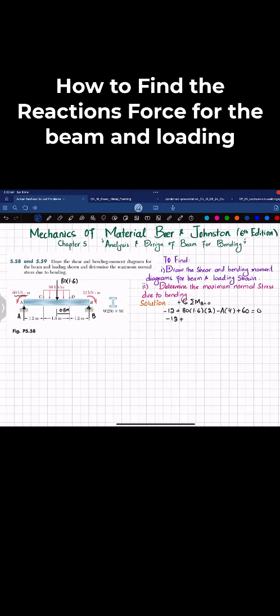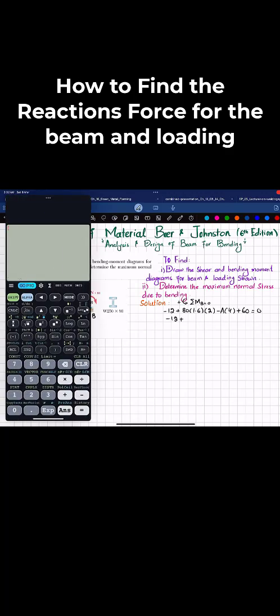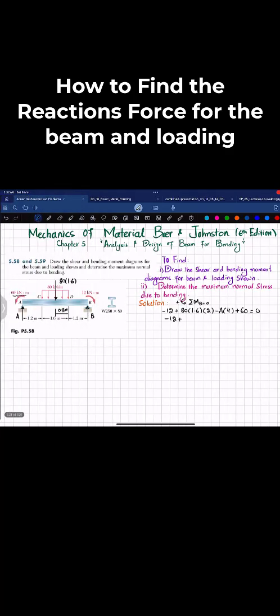So minus 12 plus 80 times 1.6 times 2 is 256, minus 4 times A, plus 60 equals zero.